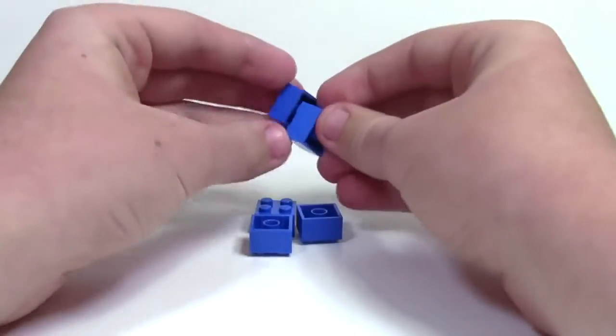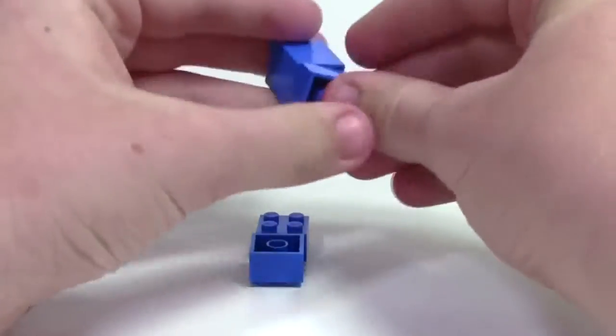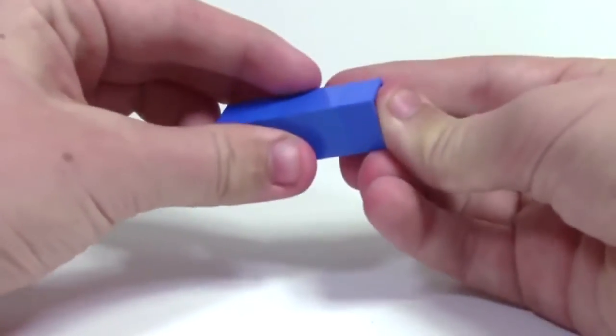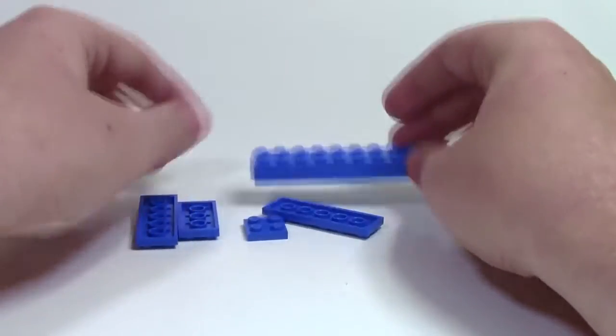Set that off to the side, and gather five 2x2 bricks, and just stack them on top of each other. Set that off to the side as well, and gather the rest of the parts you need to make the base.